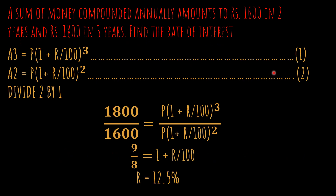Coming back to the question, this is the formula for amount in the third year when interest is charged compounded annually. A3 is equal to P × (1 + r/100)^3, and the amount for the second year is P × (1 + r/100)^2. We will be dividing the third year by the second year, so 1800 upon 1600, and here we fit in the formulas.